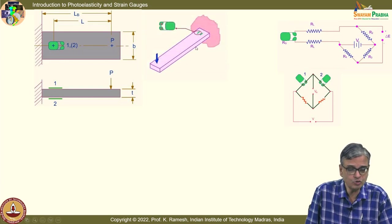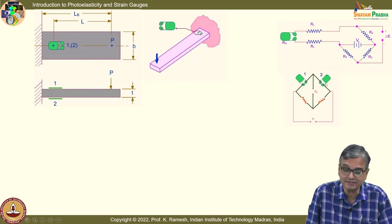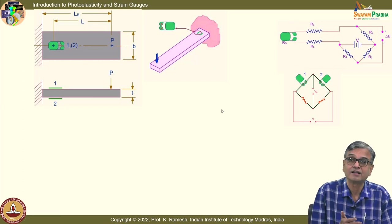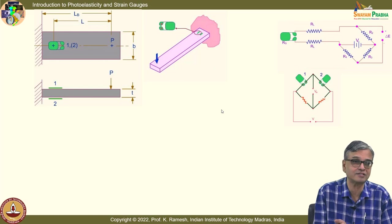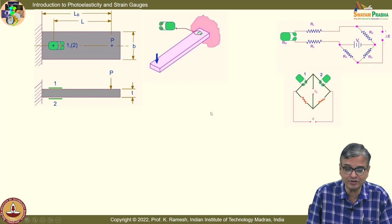You can also amplify the signal by putting two strain gauges on the beam. But if you do not connect them properly — if you connect them incorrectly — you will get zero signal instead of twice the signal. So you have to handle the Wheatstone bridge appropriately.